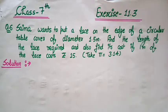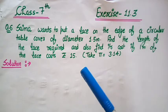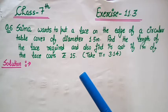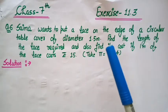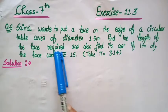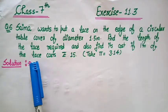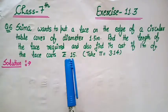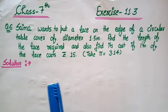Question number 6 is: Sema wants to put a lace on the edges of a circular table cover of diameter 1.5 meter. Find the length of the lace required and also find the cost if 1 meter of lace costs rupees 15.